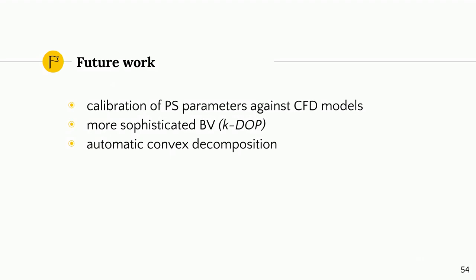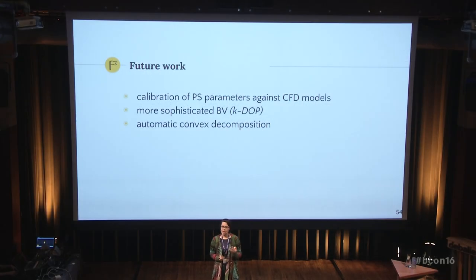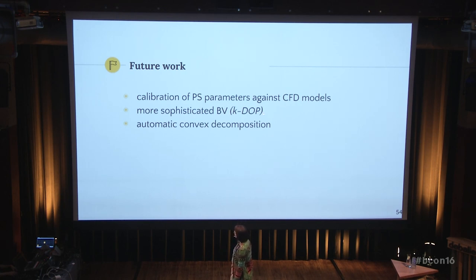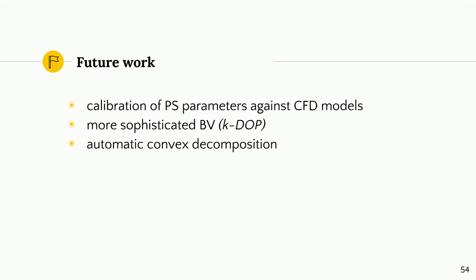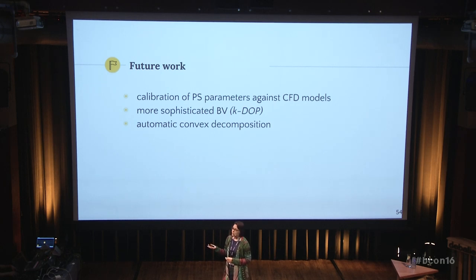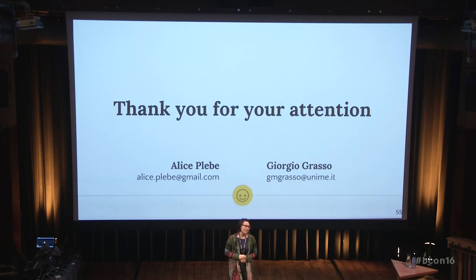Let me conclude with possible future implementations. One ongoing activity is the calibration of parameters used in Blender. We can use a CFD tool to simulate a specific class of fuel, and then check back in Blender which settings reproduce a flame with the same characteristics. Then we will experiment with more sophisticated bounding volume types, both for the flame and for the broad phase — instead of AABB, we will use a k-discrete oriented polytope, which uses k different orientations of planes. Finally, we will experiment with an automatization of decomposition of complex assets into simpler convex sub-components. Thank you very much for your attention.